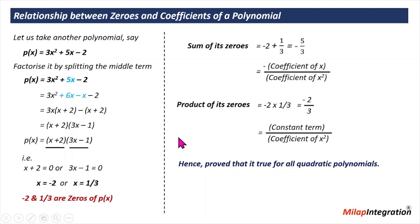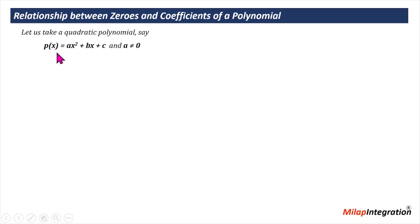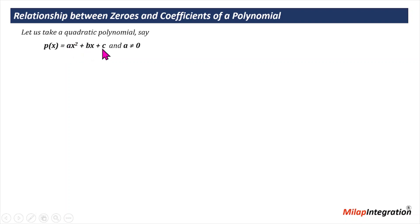We have found that for a quadratic polynomial there is definitely a relation between the zeros and the coefficients. To make it generic, we write a quadratic polynomial as p(x) equals ax squared plus bx plus c, where a is not equal to zero. Because if a equals zero, then bx plus c is a linear equation, not a quadratic equation.